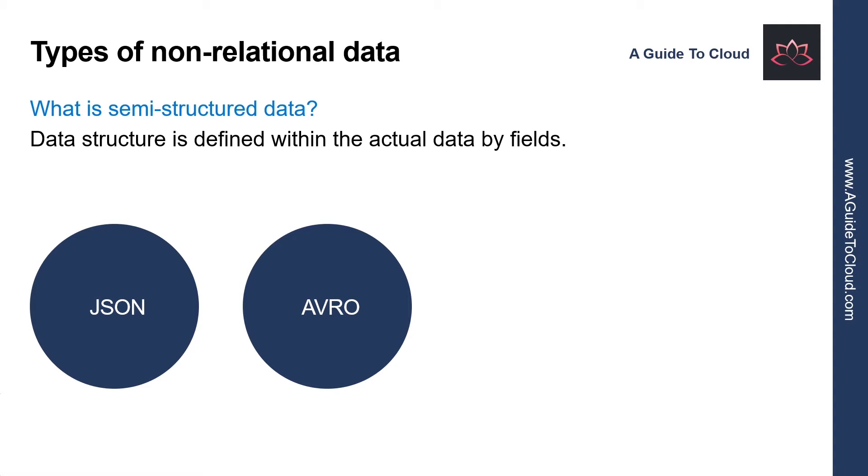Let's look at the other format. Avro is a row-based format. It was created by Apache. Each record contains a header that describes the structure of the data in the record. This header is stored as JSON. The data is stored as binary information. An application uses the information in the header to parse the binary data and extract the fields it contains. Avro is a very good format for compressing data and minimizing storage and network bandwidth requirements.